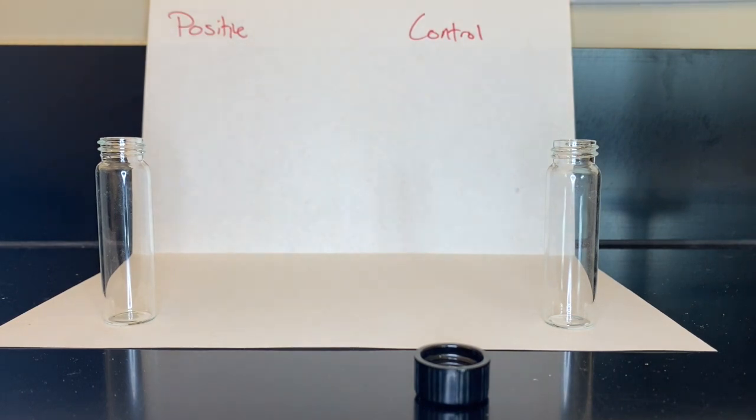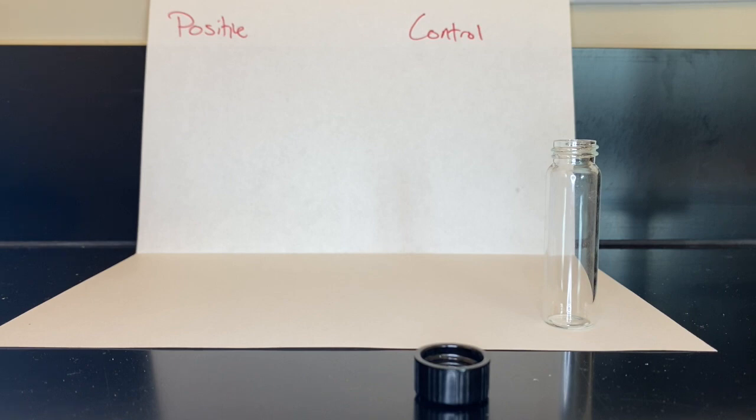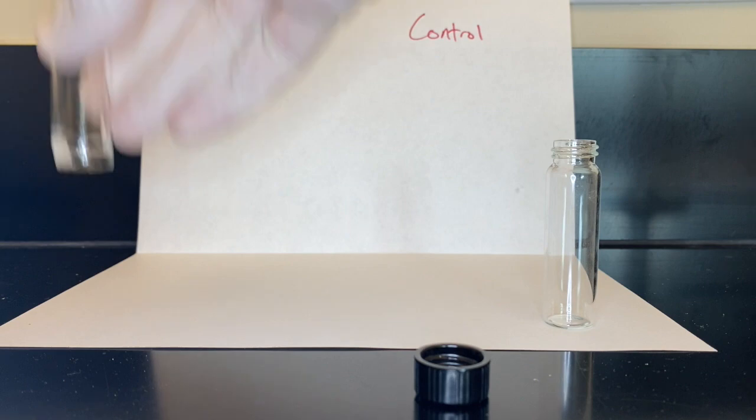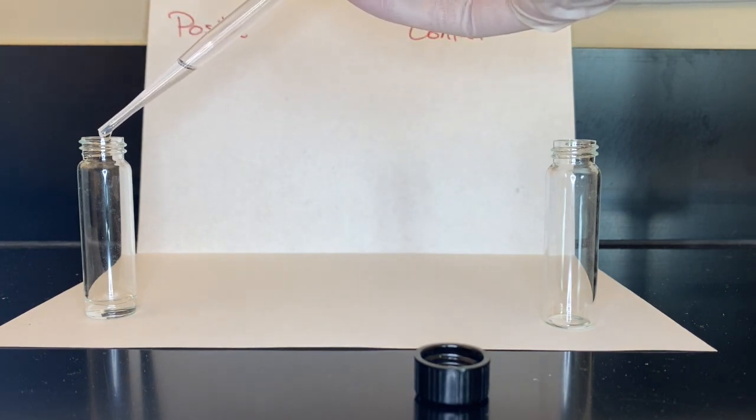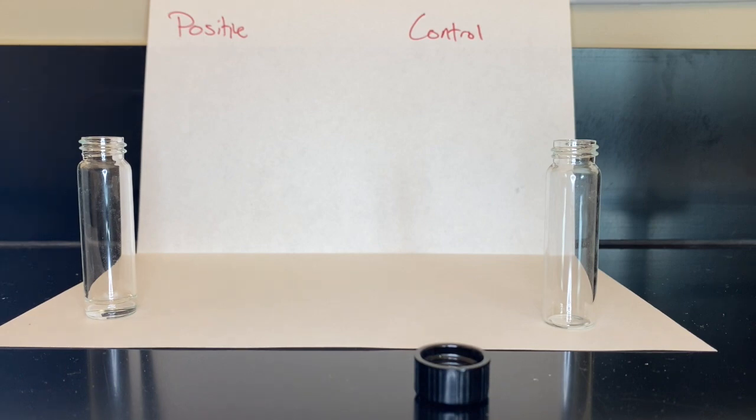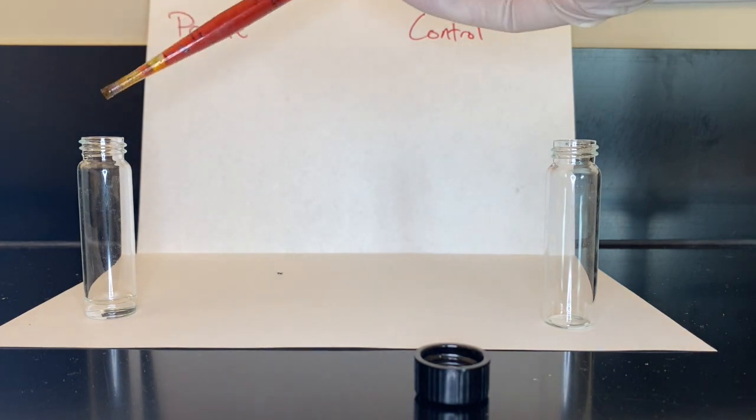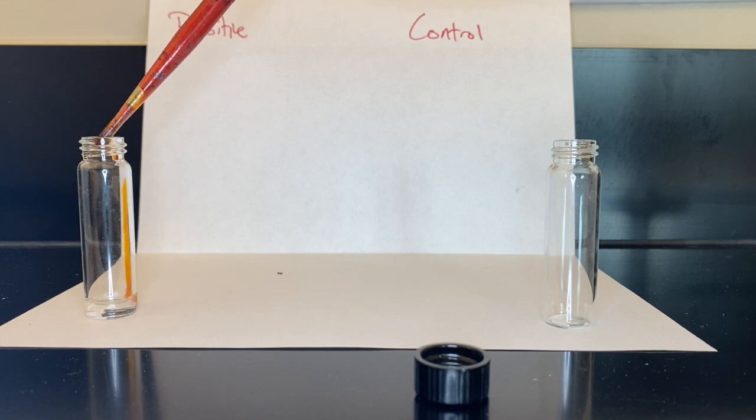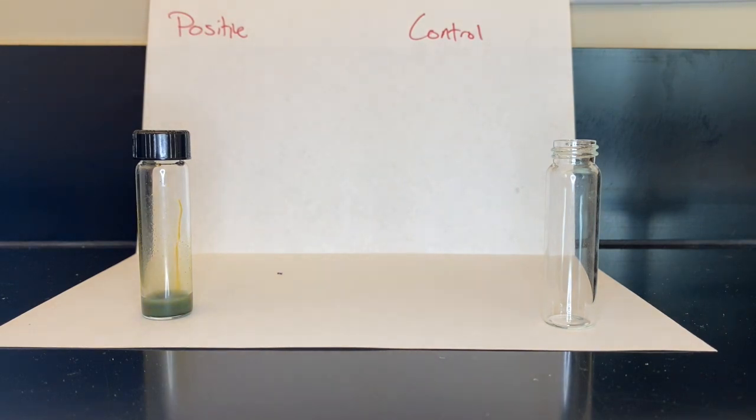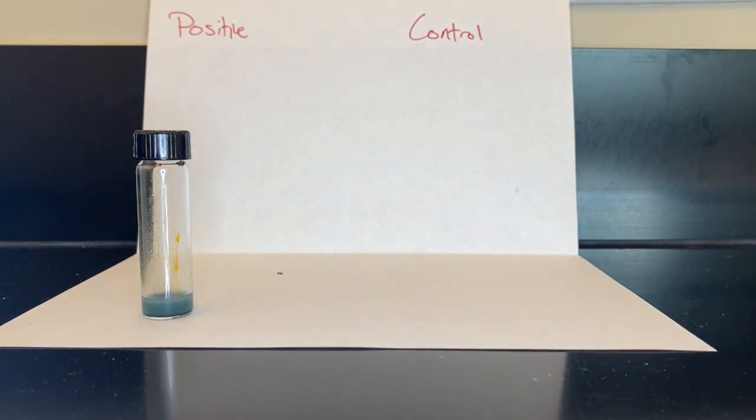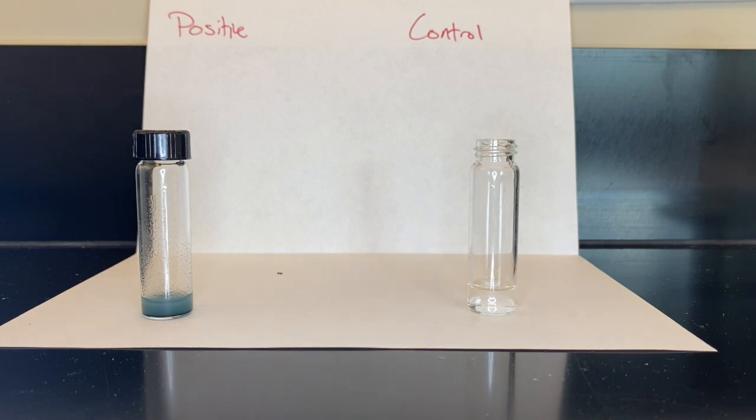This is going to be the Jones reagent test where we're testing for primary and secondary alcohols. We're going to have the positive where we know we're going to get a reaction. We're going to add our 1 ml of acetone, add a drop of unknown, in this case ethanol, and then we're going to add our reagent. Then we're going to cap it and shake it. You can see that it went from that orange color to blue-green almost instantly.